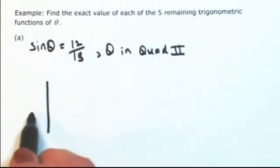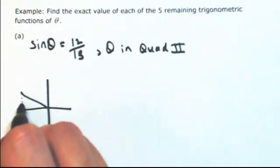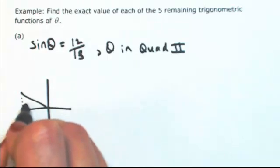So I'm going to draw this angle in quadrant 2, and then extend that down back to the x-axis so it forms a right triangle.